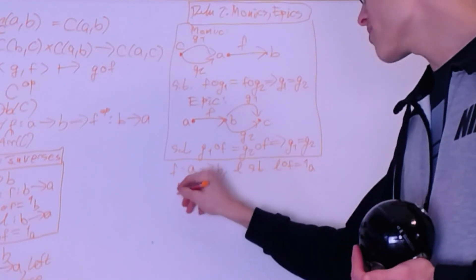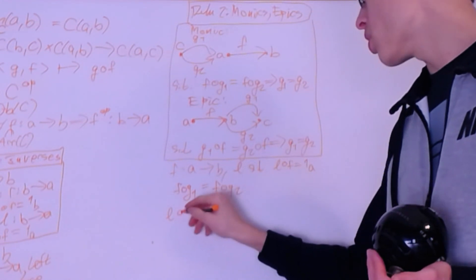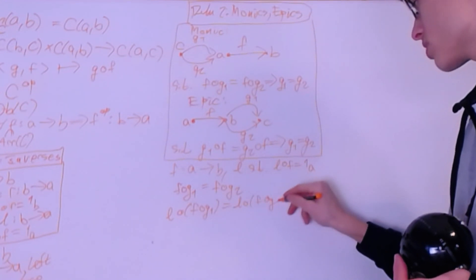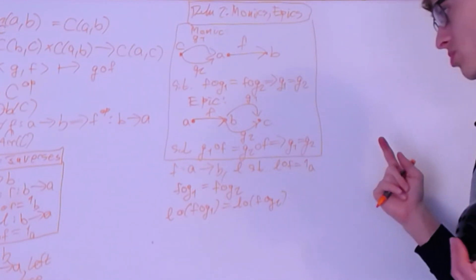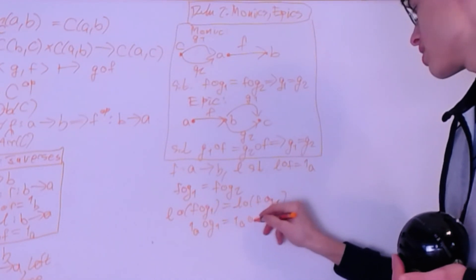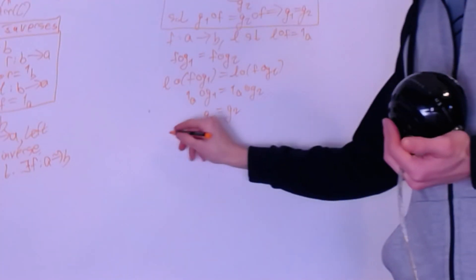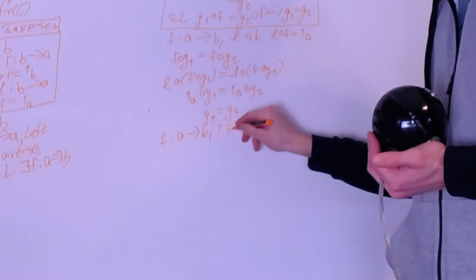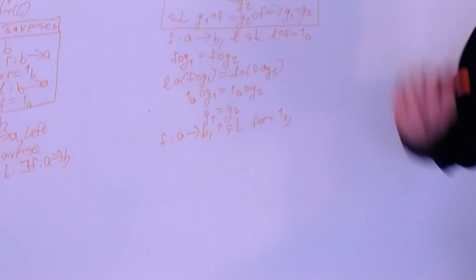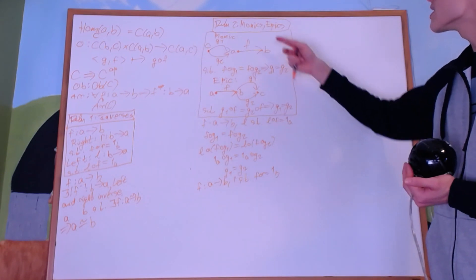The reason F with a left inverse is monic: if F composed G1 equals F composed G2, compose L on both sides. By equality they remain equal; by associativity we get the identity arrows, and then G1 equals G2. Similarly, if F from A to B has a right inverse R so that F composed R equals the identity on B, then F is epic — but it doesn't necessarily go the other way. This is the connection between invertible arrows and monics and epics.